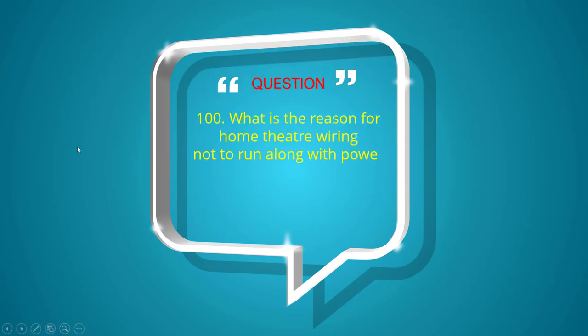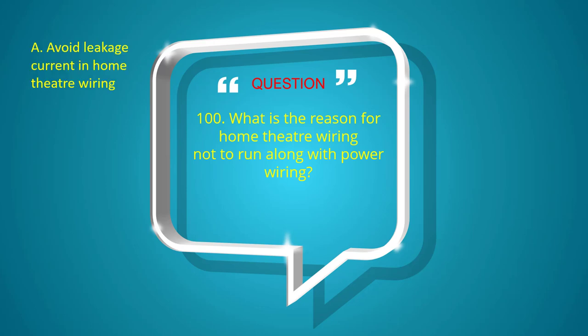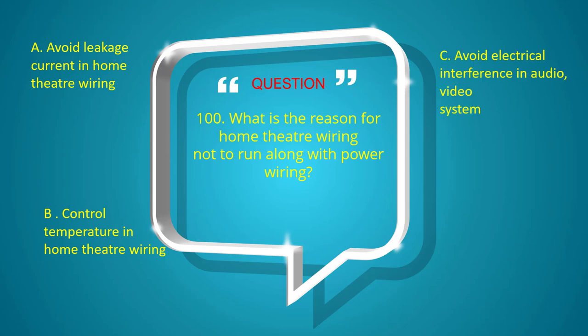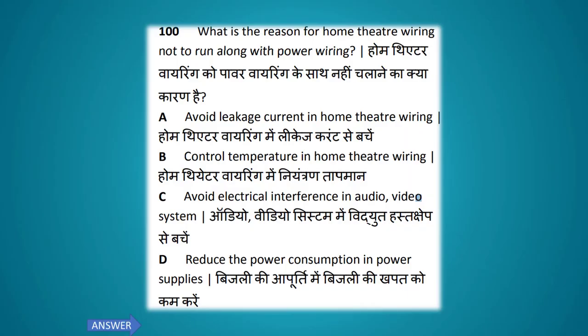What is the reason for home theater wiring not to run along with power wiring? Options: avoid leakage current in home theater wiring, control temperature in home theater wiring, avoid electrical interference in audio and video system, reduce the power consumption in power supplies. The answer is avoid electrical interference in audio and video.